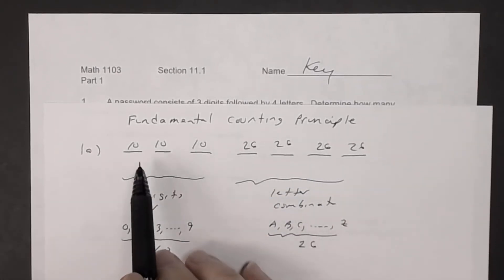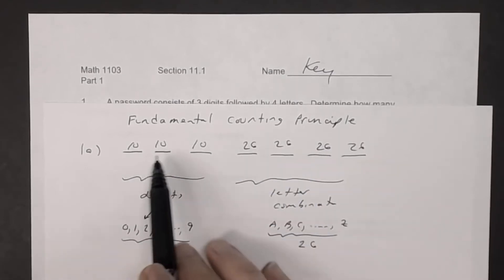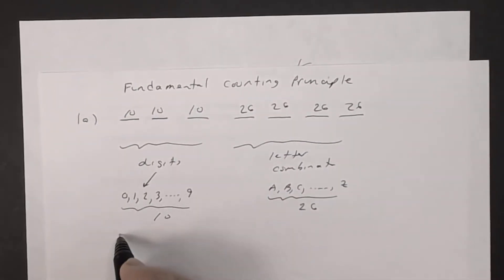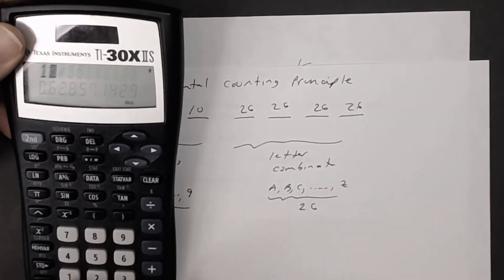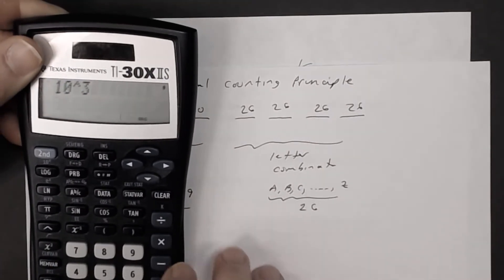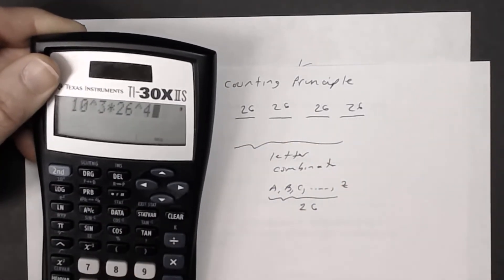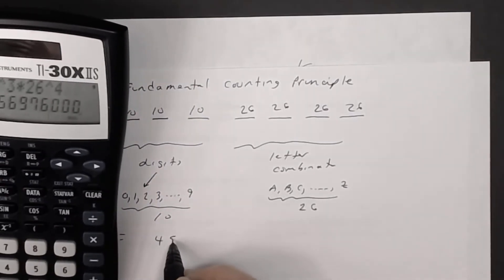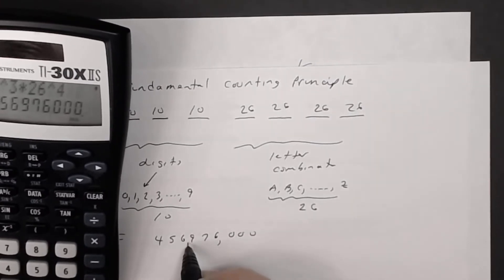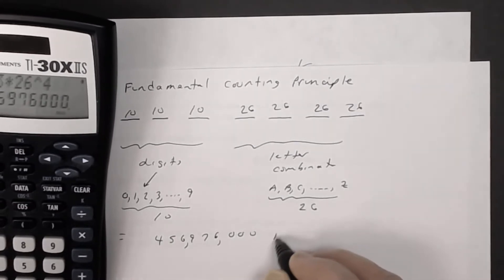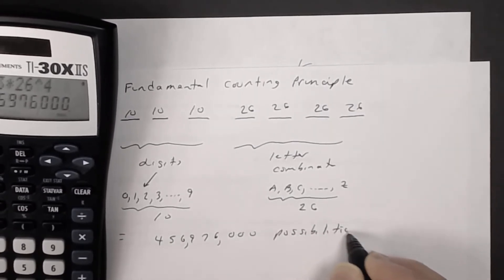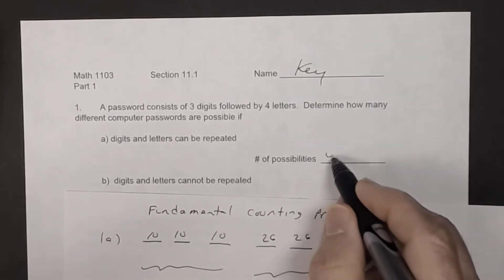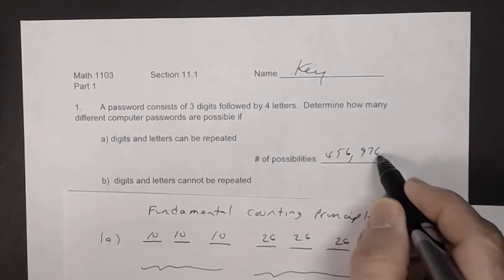By the fundamental counting principle, the number of possibilities is the product of all choices. That gives us 10 to the third times 26 to the fourth, which equals 456,976,000. So there are 456 million possibilities for part A.